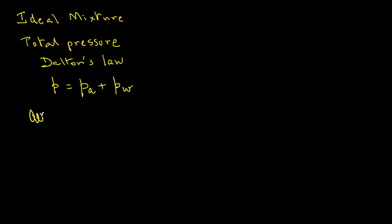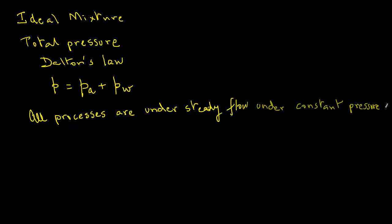We will model all the processes in psychrometrics as steady flow and under constant pressure. The dry air and water vapor mixture follows ideal gas laws from minus 40 degrees Celsius to 65 degrees Celsius, and at total pressures up to 300 kilopascals.